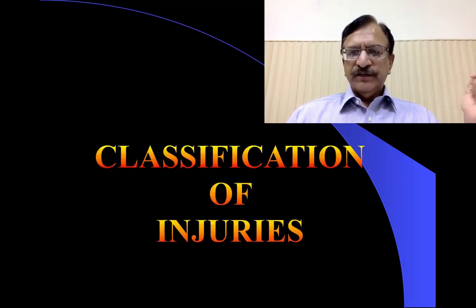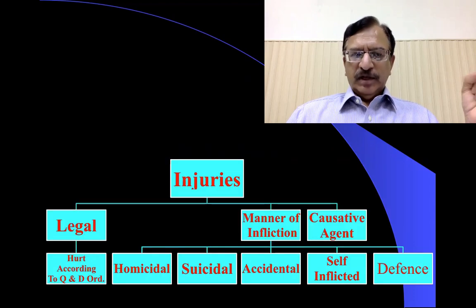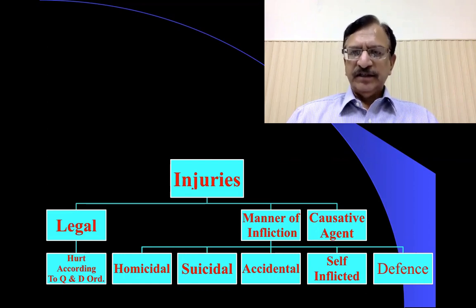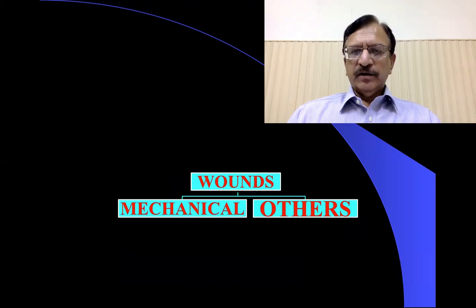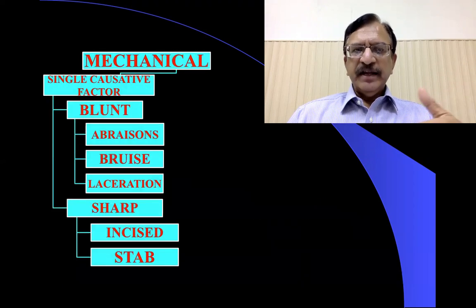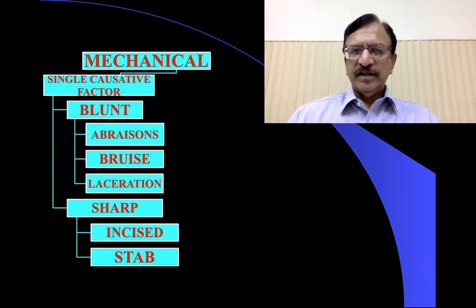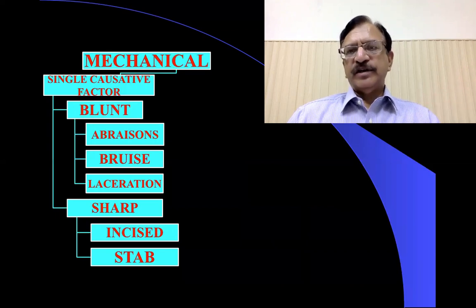Going through the classification of injuries: injuries are classified legally, depending upon the law prevalent in our country Pakistan, or by manner of infliction — that is, homicidal, suicidal, or accidental — then upon the causative agent. By causative agent, injuries can be mechanical. Mechanical injuries by blunt weapon will be abrasion, bruise, or laceration, and by sharp edge weapon they will be incised or stab wounds.